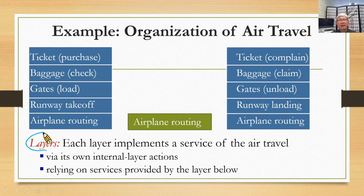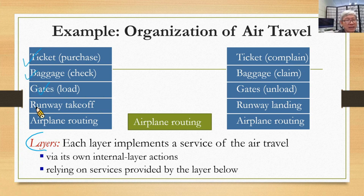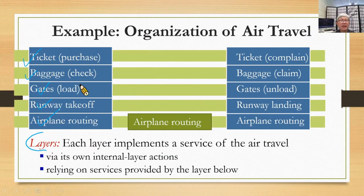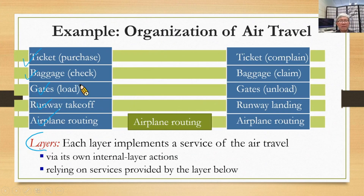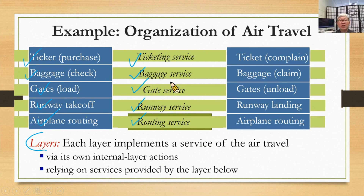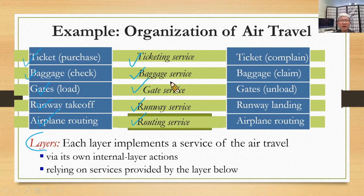Layers can split the whole task into several ones, including ticket, baggage, gate, runway, and routing. And therefore, we have the corresponding services: ticketing, baggage, gate, runway, and routing service. So of course, we should follow this model.